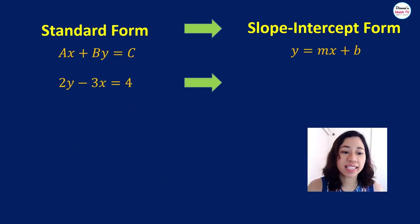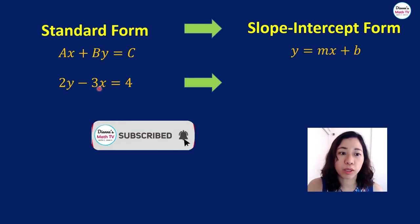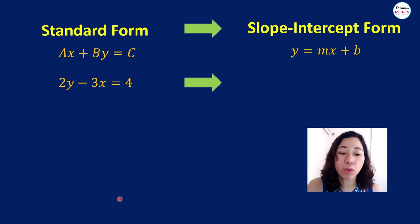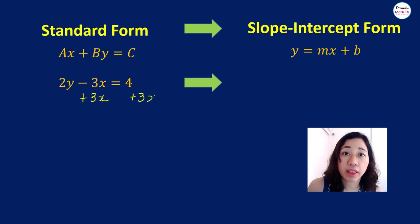For our last example, we have 2y minus 3x is equal to 4. This is our y term over here. Remember, we have to eliminate the x, the term involving x first. This is minus 3x. So how do we eliminate minus 3x here? Opposite operation. If this is minus 3x, what will we do? We will add 3x on both sides of the equation. This will cancel out. We have 2y is equal to 4 plus 3x.